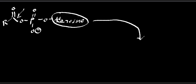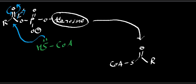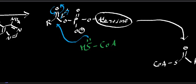This is still the same enzyme — fatty acyl CoA synthetase. Now coenzyme A is going to come in; I'll draw that in green. Coenzyme A has a lone pair on its thiol, and that thiol lone pair is going to do a nucleophilic acyl substitution, kicking off AMP. What we have left is coenzyme A in a thioester bond with the fatty acid.